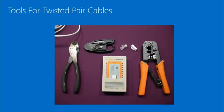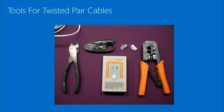Now let's talk about tools for twisted pair cabling. On the far left are wire strippers — these are actually wire cutters used by seasoned professionals. You have to carefully cut the sheath without cutting the wires inside, so there's some finesse involved. They strip the outer wiring off to get to the metal component within the wire.